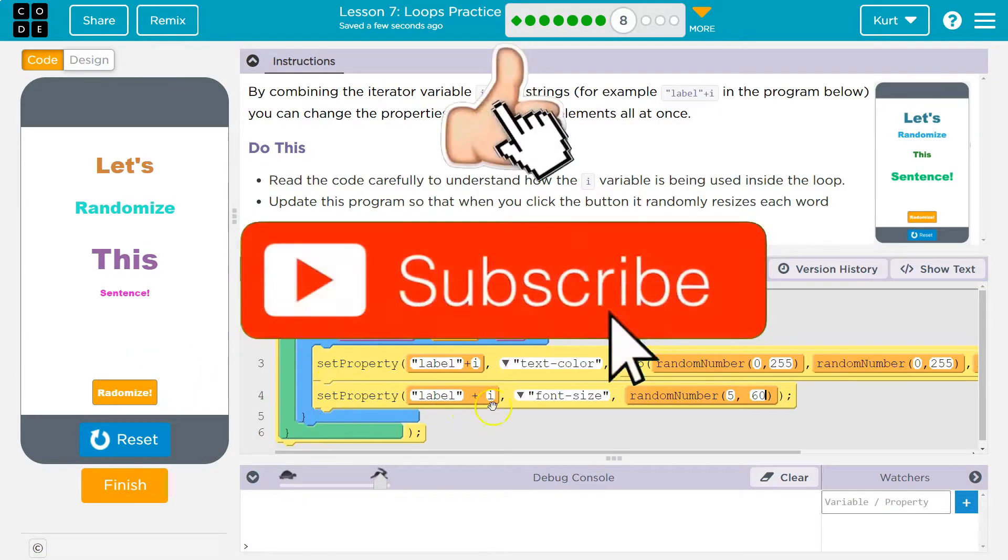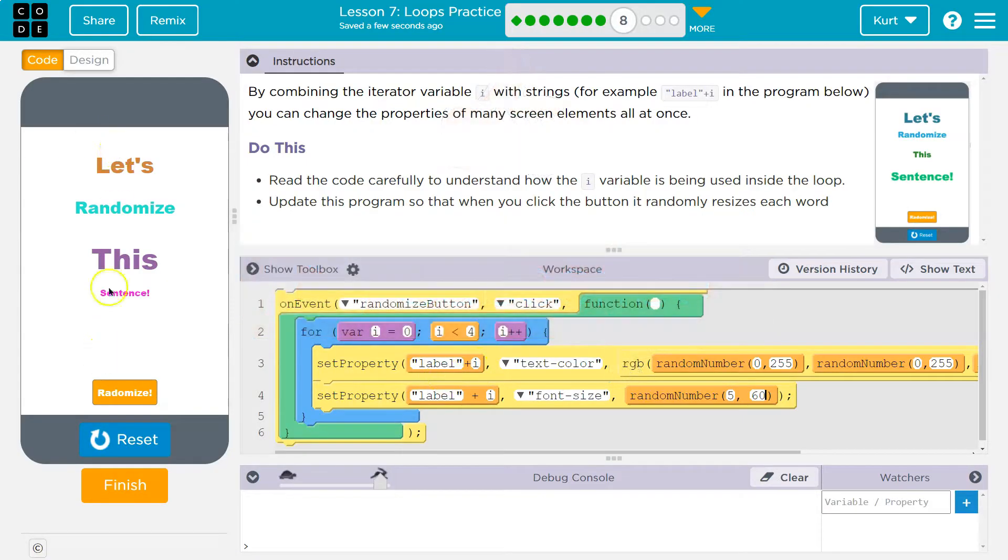And so we can use one loop and concatenation, right? That's what it's called, smacking together, this number and this string, to go through multiple elements at the same time and change properties. We're getting fancy. Let's keep going.